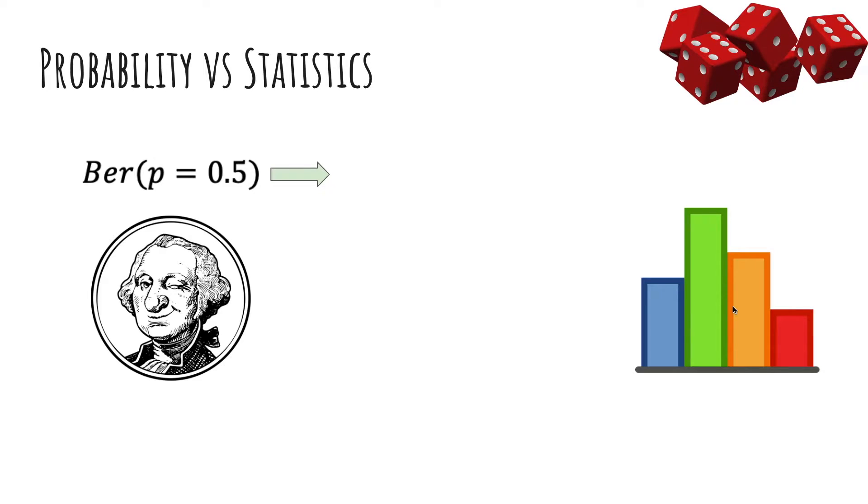What we've been doing up to this point is probability. We're given a model, like Bernoulli with this particular P equals 0.5, that's an assumption, and we're trying to find out the probability of some data. So given this model, what is the probability of tail, head, head, tail, head? And that's actually something you know how to do now.